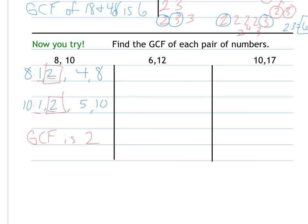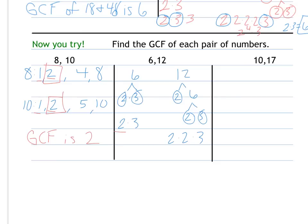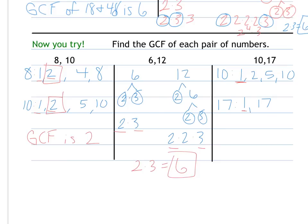Using prime factorization for 6 and 12: 6 breaks down to 2 times 3. 12 breaks down to 2 and 6, then 2 and 3, giving 2 times 2 times 3. The common factors are 2 and 3, and 2 times 3 is 6, so the greatest common factor is 6. For 10 and 17: factors of 10 are 1, 2, 5, and 10. But 17 is prime — its only factors are 1 and 17. So the greatest common factor of any number and a prime number is going to be 1.